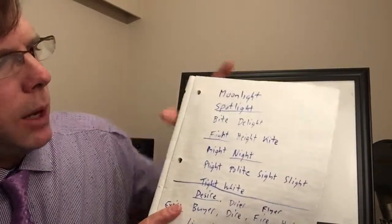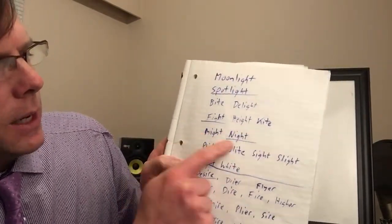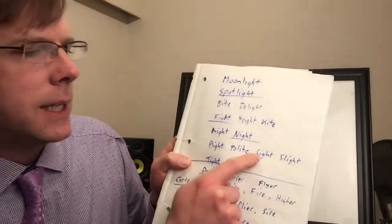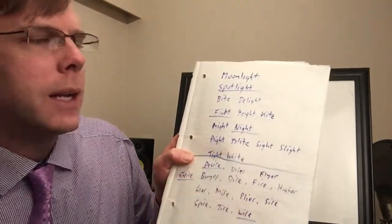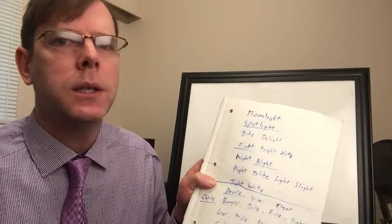And I wrote this down. So I had moonlight, spotlight, bite, delight, fight, height, kite, might, night, plight, polite, sight, slight, tight, and white. That is 15 choices I had.